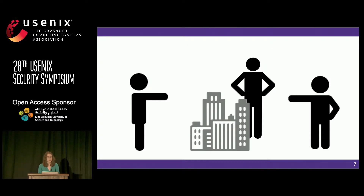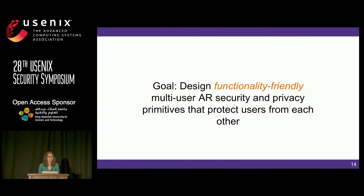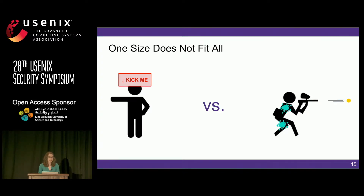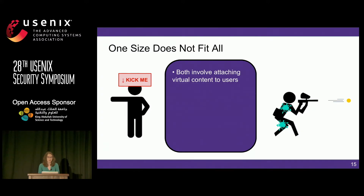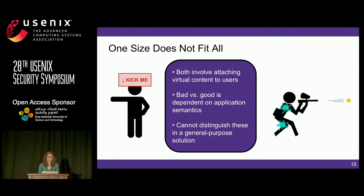But we also want to enable good multi-user AR collaboration to happen. We want application developers to easily build collaborative applications without inviting the problems introduced earlier, which means we need to achieve our goal in a functionality-friendly sort of way. To illustrate why this is hard, consider the kick-me sign versus the paintball case study. Both involve attaching virtual content to users, but for the sign it's bad and we want to prevent it, while for paintball it's good and necessary for application functionality. The difference is dependent entirely on application semantics, so in building a general-purpose solution we cannot distinguish good versus bad a priori. We have to loop application developers in and give them a voice in what makes sense for their application.